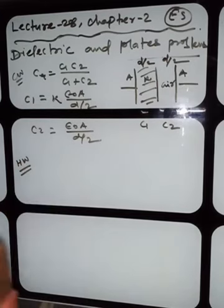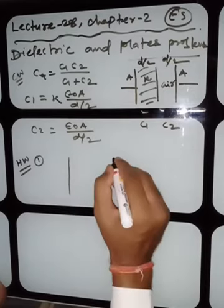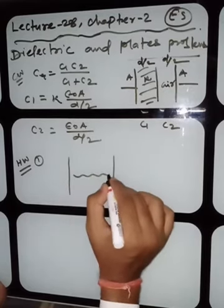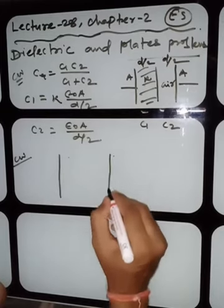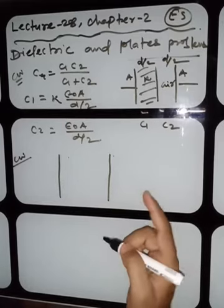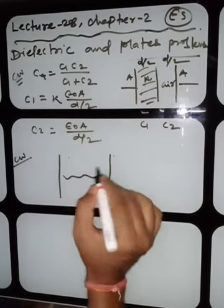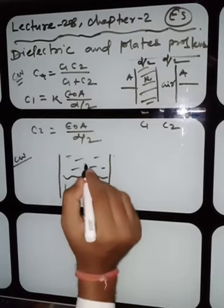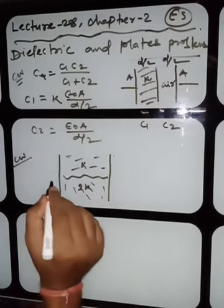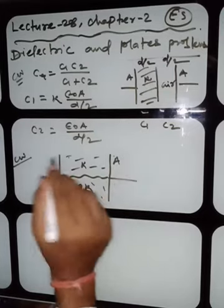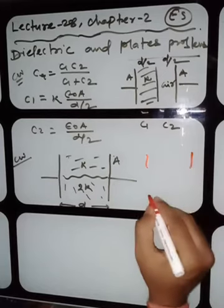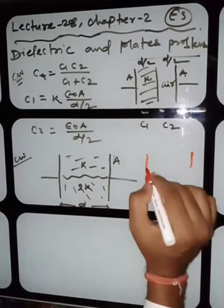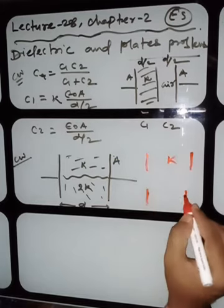Now this is your homework. For the next example: the dielectrics are filled in this way — this is K and this is 2K — with total plate area A and separation D. You have to find the equivalent capacitance. We will divide the capacitor: one filled with K1 = K and another filled with 2K.